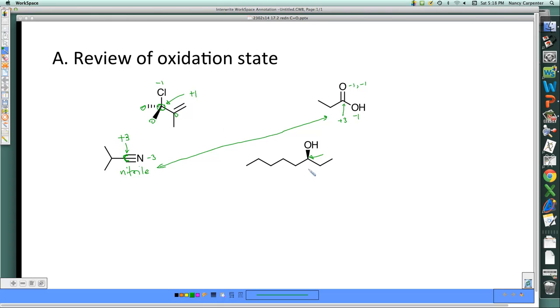What about this carbon? Well, nitrogen, like oxygen, is more electronegative than carbon. So we've got nitrogen bonded three times. So we've got a minus three here. So what we're finding out is that this nitrile is in the same oxidation state as the carboxylic acid. They are equally oxidized. Then finally, what about this alcohol? Well, beware! The evil line structure strikes again.